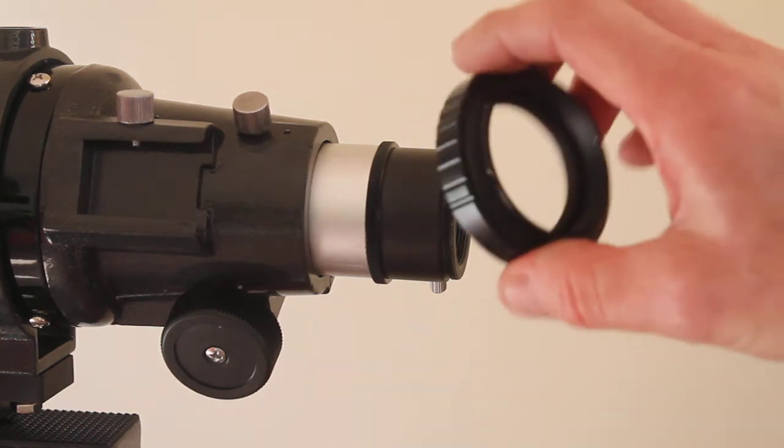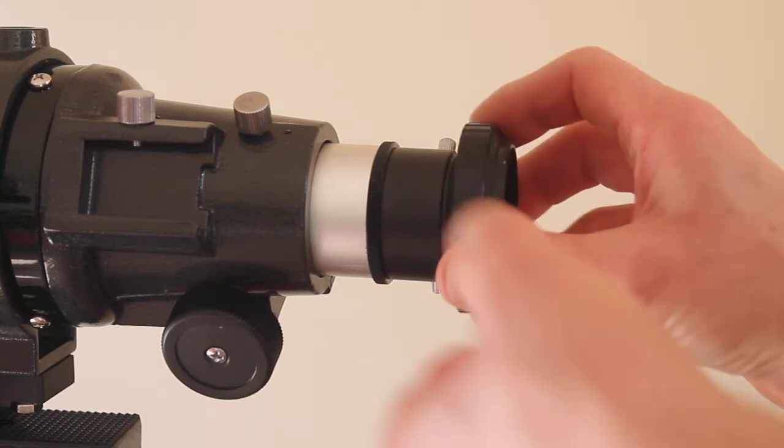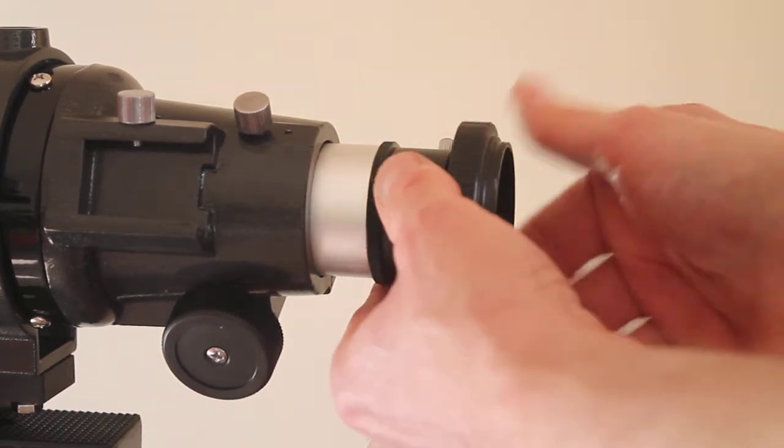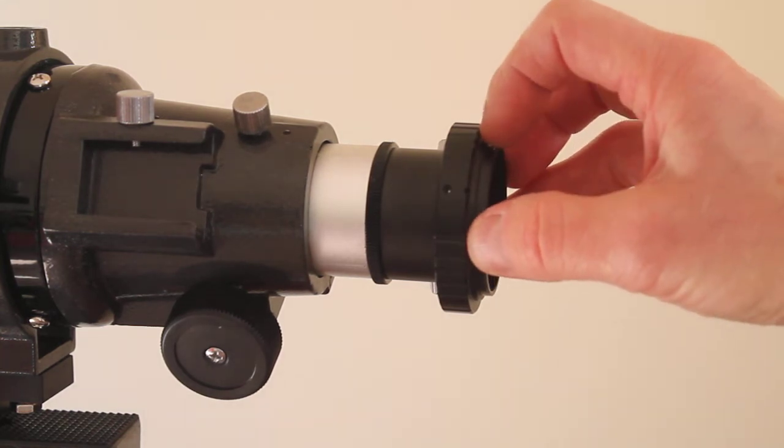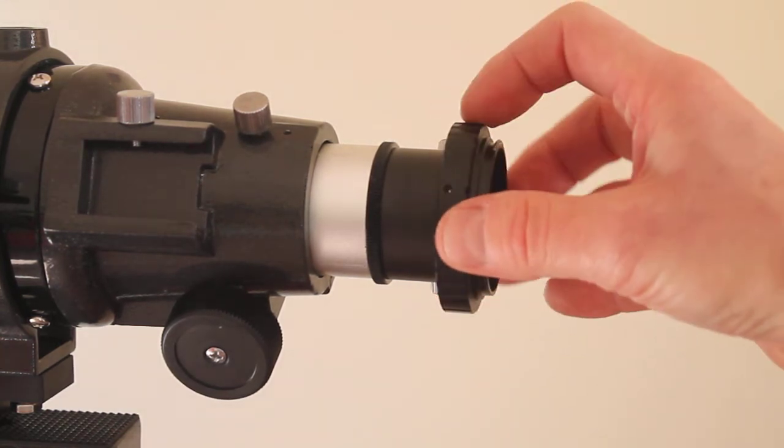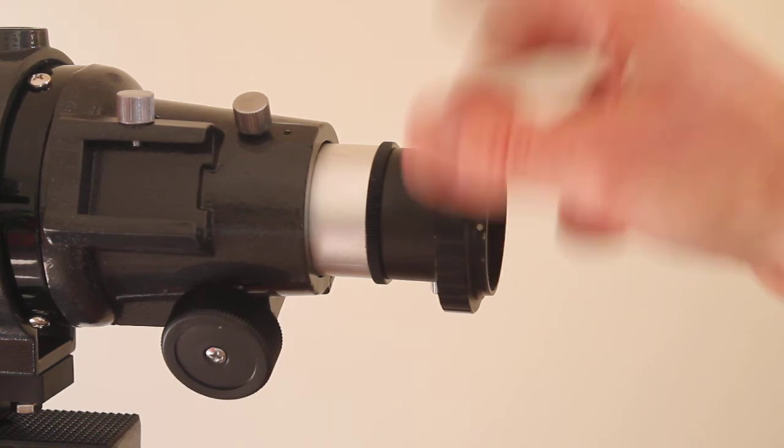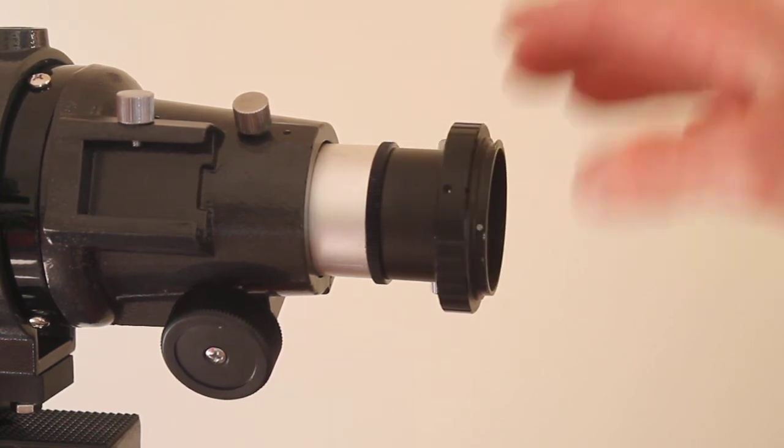All you do is get your T-ring for whichever camera you have—this one's a Canon EOS—screw it on, then connect your camera body to the T-ring and you're good to go.